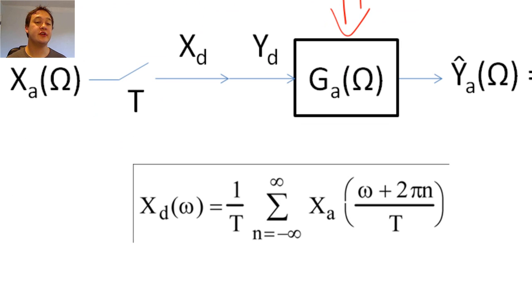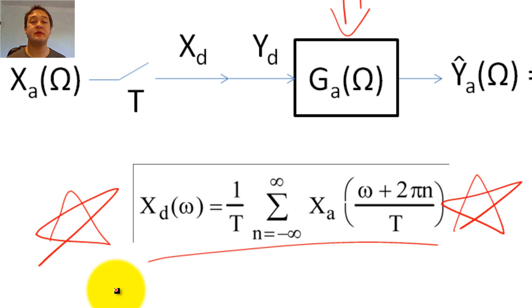We learned earlier that the discrete-time Fourier transform is related to the Fourier transform according to the following formula. You absolutely need to be able to understand this formula and its implications.